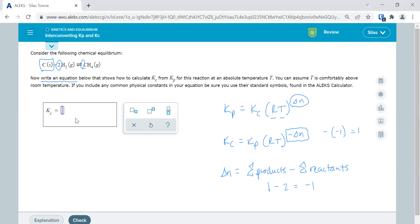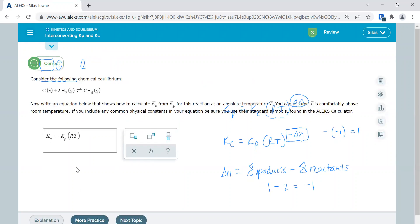So I'm going to plug in Kp RT. And I don't need to raise it. Now, if it was a 2 or something, I could put that up there, but there's not. So I'm just going to put Kp RT. There we go.